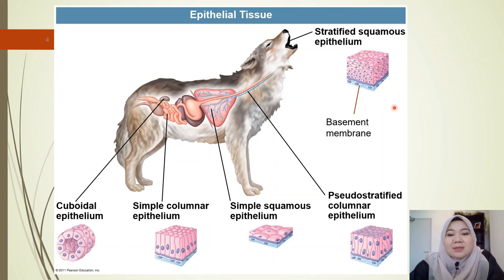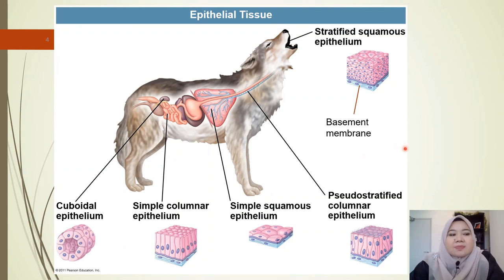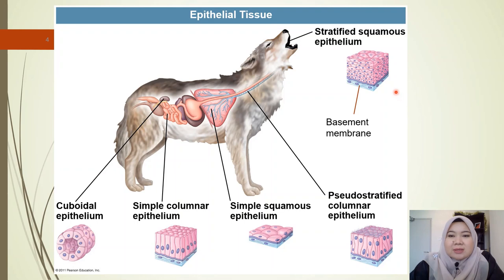But before that, please note the basement membrane. The basement membrane is a thin fibrous extracellular matrix that separates the lining of the internal or external body surface from the underlying connective tissue. Most of the epithelial tissues are all attached to the basement membrane.